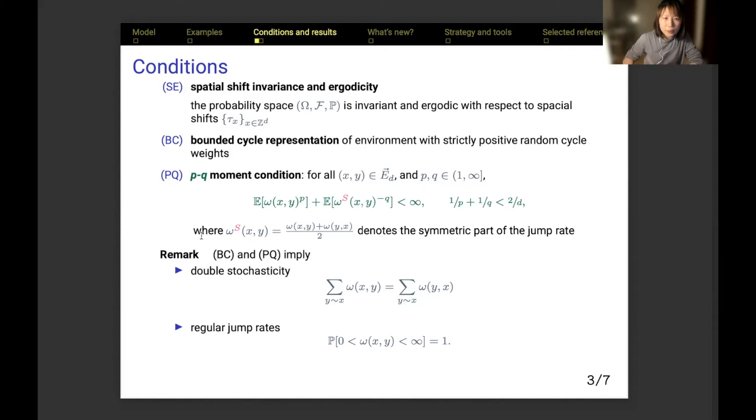In particular, the second and third conditions imply two properties. First, double stochasticity: the sum of the rates jumping into a site x equals the sum of the rates jumping out of site x. Second, the jump rates are regular in the sense that almost every jump rate is positive and finite.